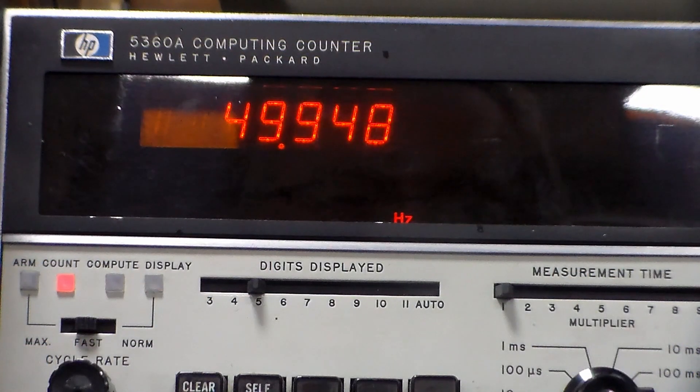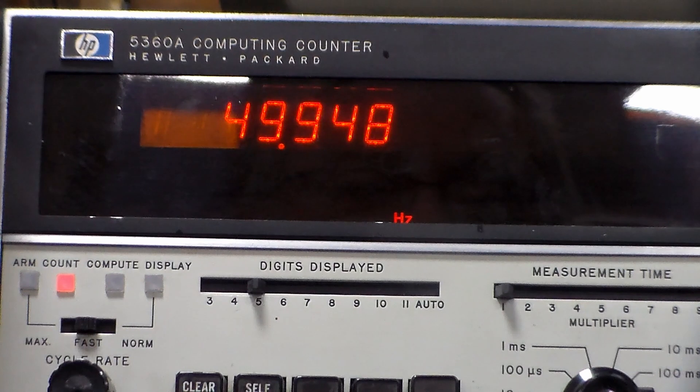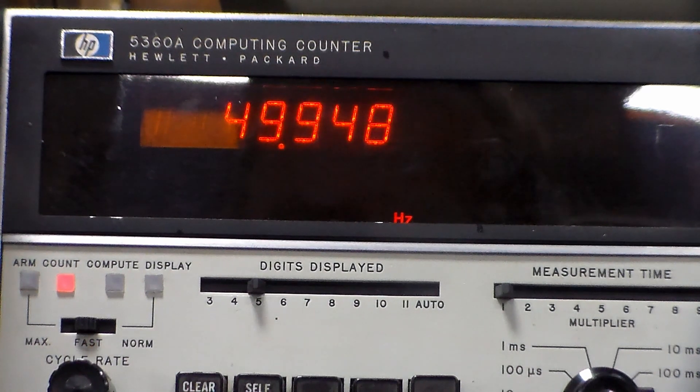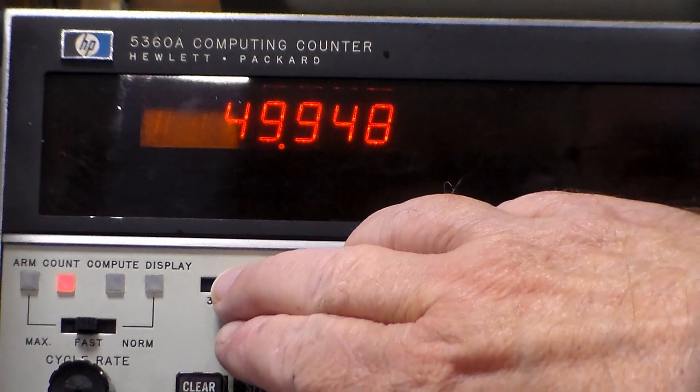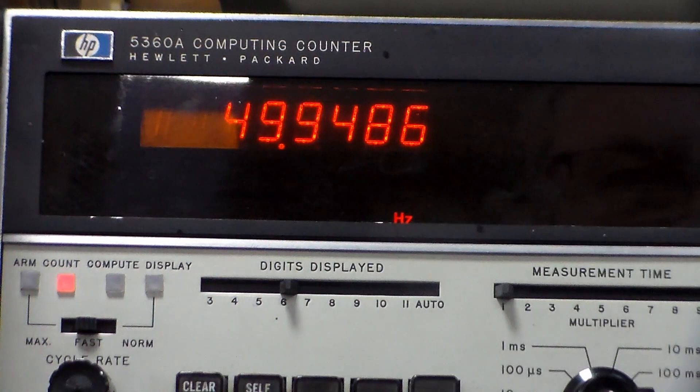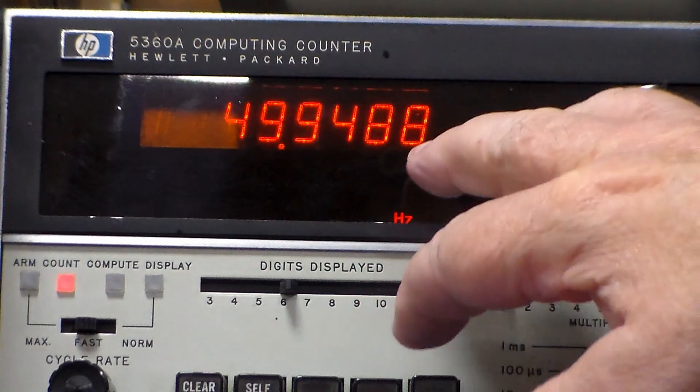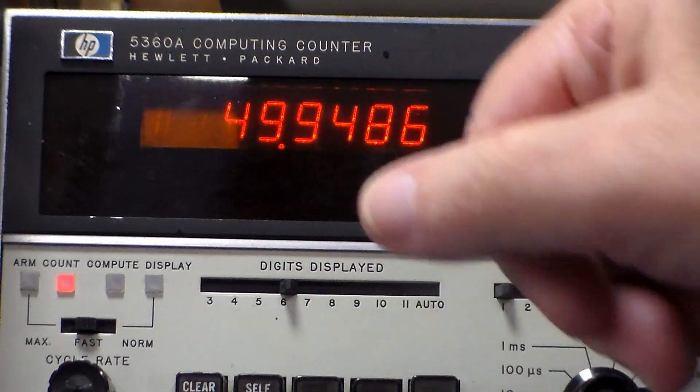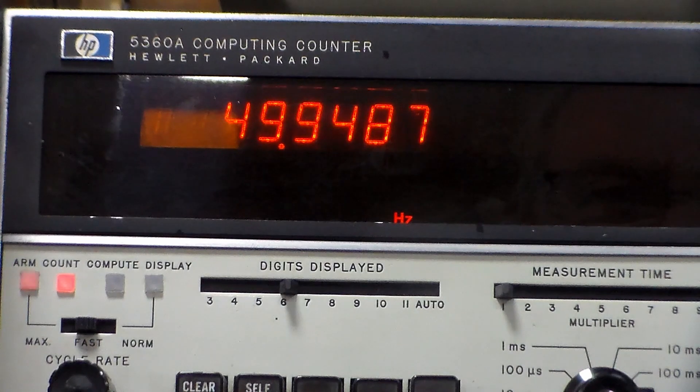And here you can see the output of the fork on a one second time interval. I've deliberately reduced the number of digits displayed, and in fact I can increase that a little bit so you can see the remaining digit moving around. But we're talking, well this digit here is millihertz, so it's remarkably stable.